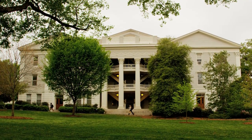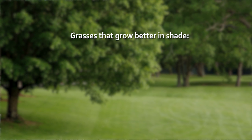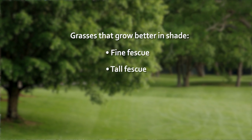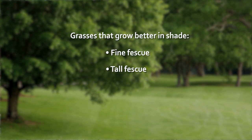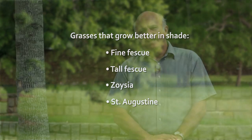You can select different cultivars or different species of grass that do better in shade. Things like fine fescue and tall fescue do well underneath trees. Some warm season turf grasses like zoysia — particularly certain cultivars of zoysia — and also St. Augustine do well. Bermuda is more problematic, but there are certain cultivars; Tiff Grand is one cultivar that will grow better underneath the tree.